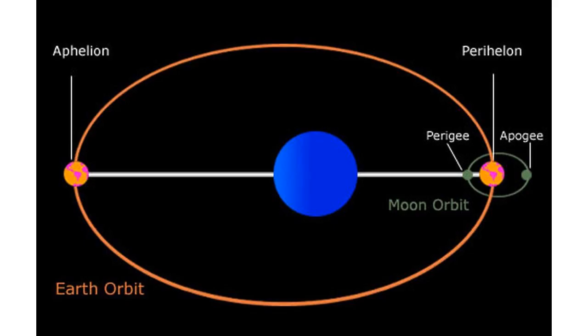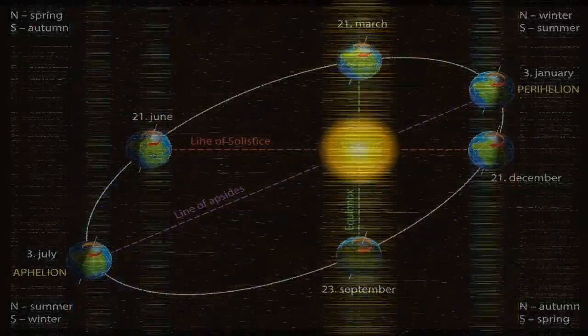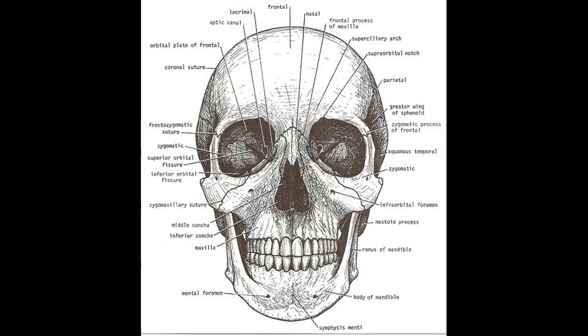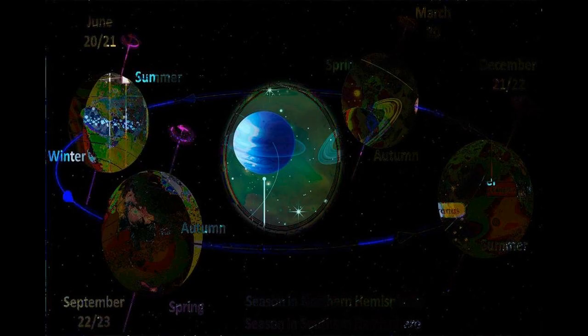The following chart of the perihelion and aphelion of the planets, dwarf planets, and Halley's comet demonstrates the variation of the eccentricity of their elliptical orbits.